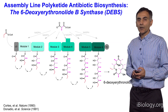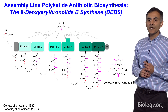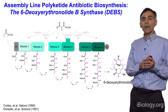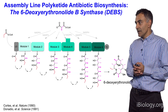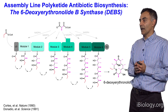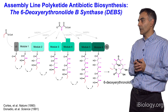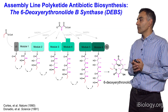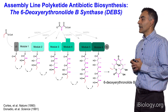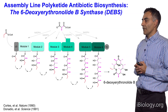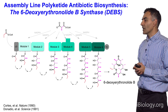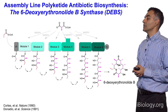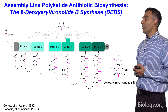Nature crafts 6-deoxyerythronolide B out of one equivalent of propionyl-coenzyme A, six equivalents of methylmalonyl-coenzyme A, and six equivalents of NADPH — a reducing equivalent in biology. Propionyl-coenzyme A primes the assembly line, and through incremental addition of precursors, each module further elaborates the growing chain to give a highly complex product. This assembly line was discovered independently by two research groups — one at the University of Cambridge and another at Abbott Laboratories — both working on this problem about 25 years ago.